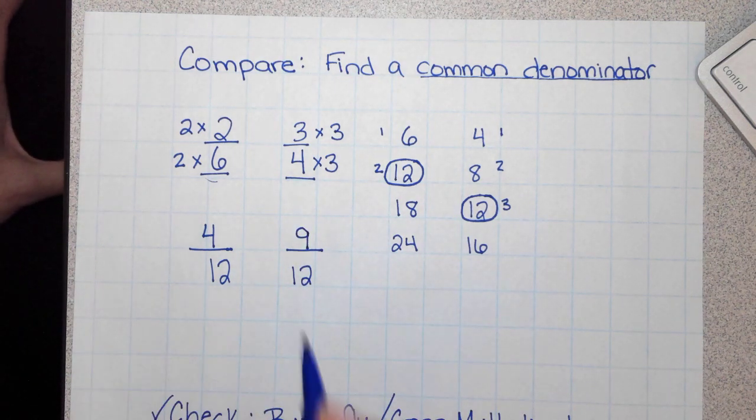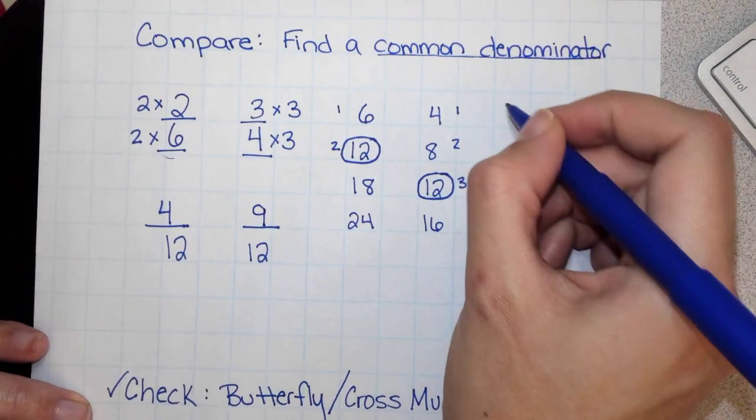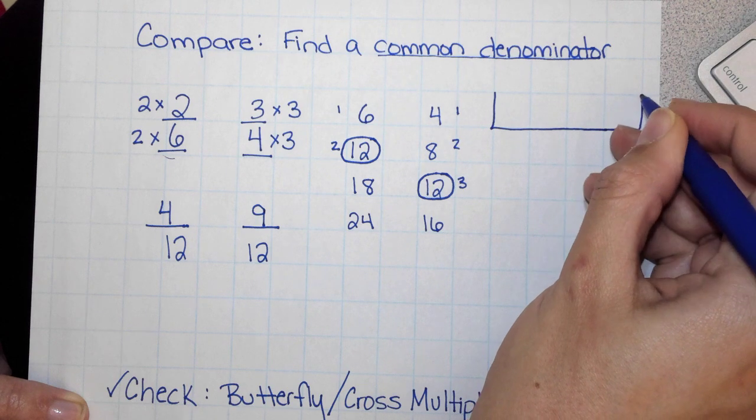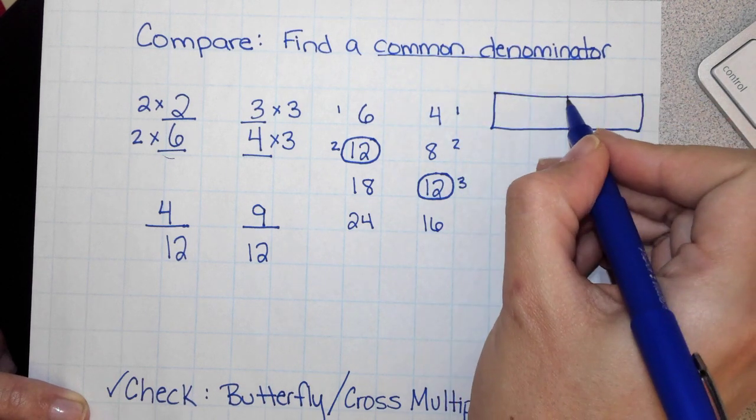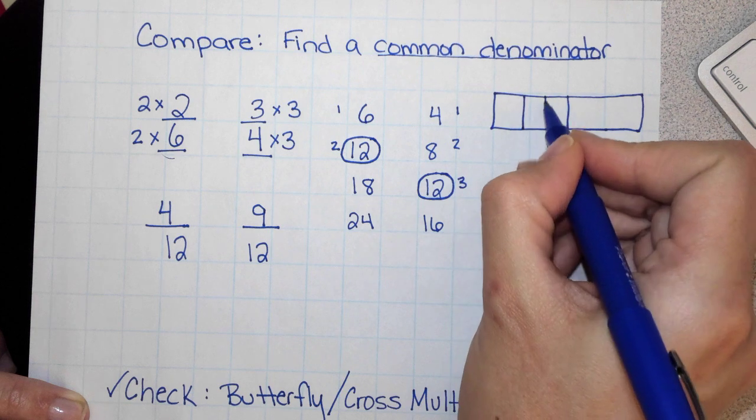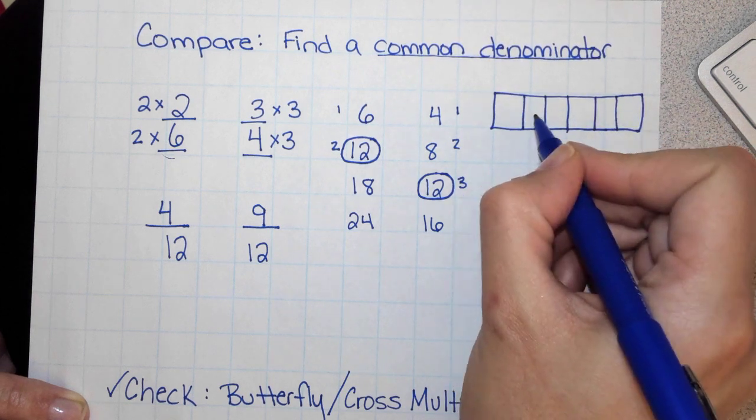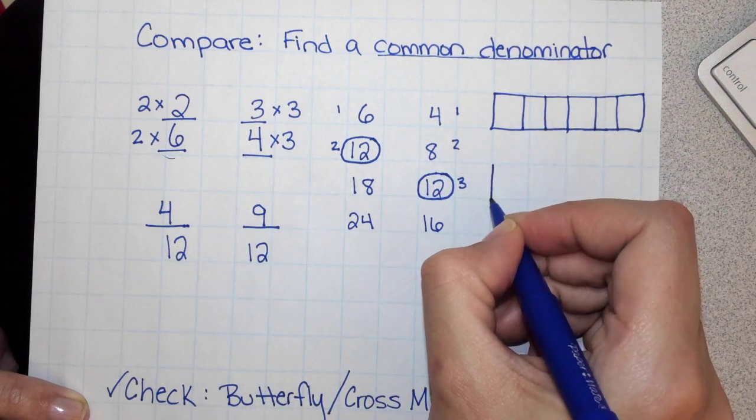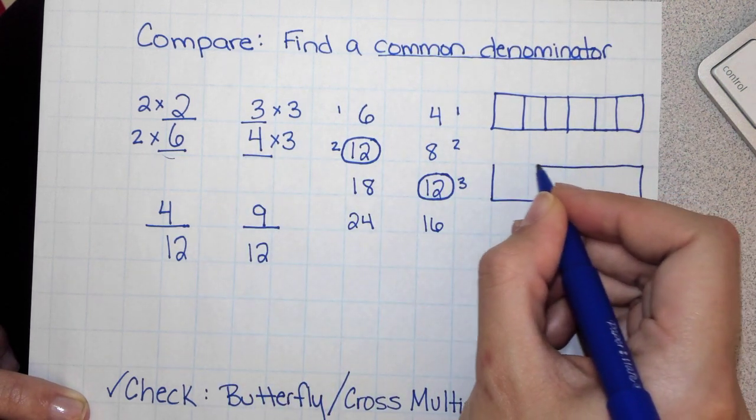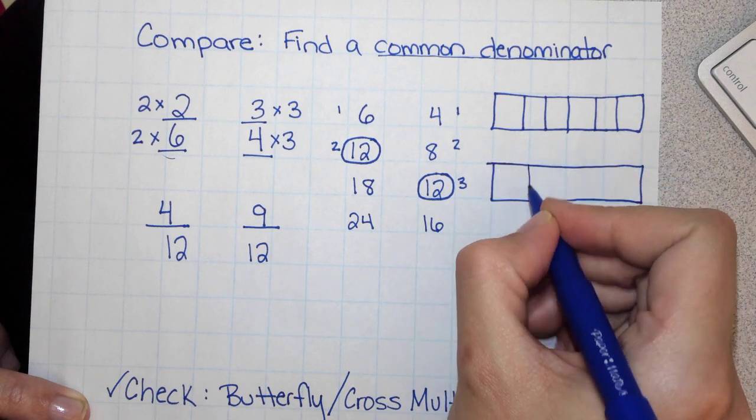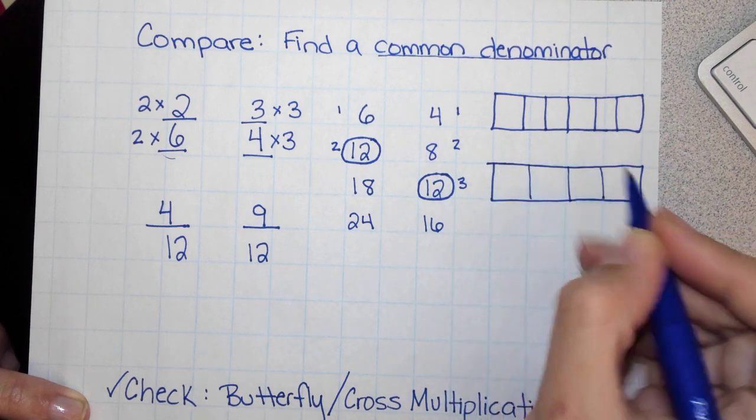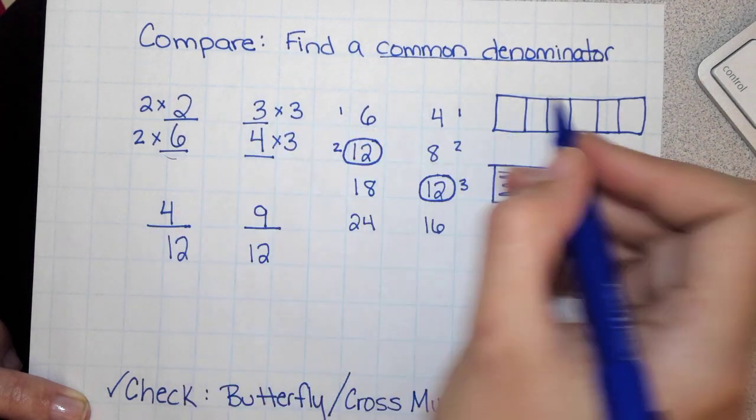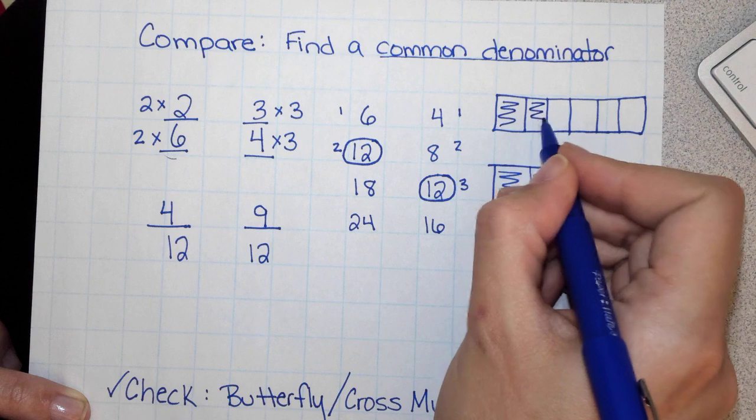The reason why this works is if we were to draw our shape models. For 2 sixths, I'll draw and divide into 1, 2, 3, 4, 5, 6 parts. And then same thing for 3 fourths: 1, 2, 3, 4 parts. So 1, 2, 3 fourths shaded. And 1, 2 sixths shaded.